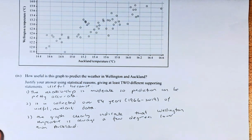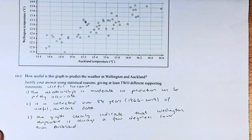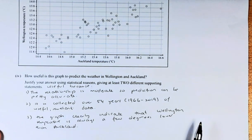Next thing, the data has been collected over 54 years, so 1966 to 2019. So of course, this data is useful because this data can be used to predict the future.